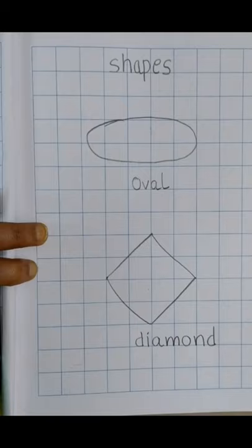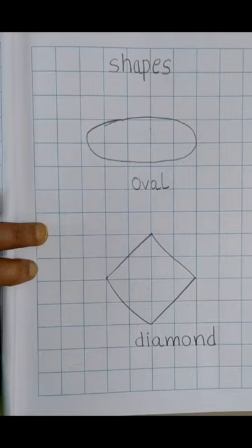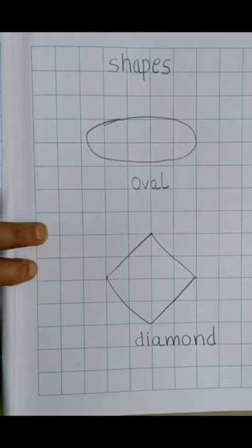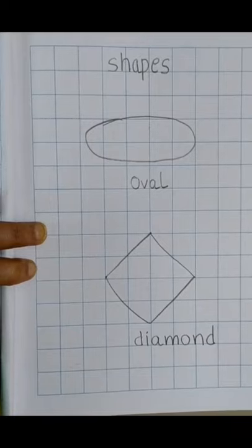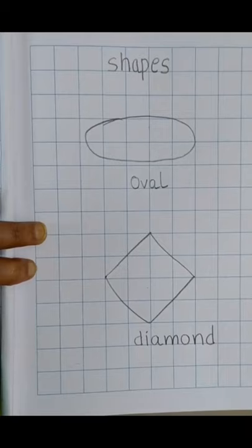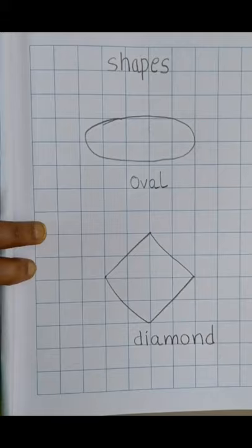And we know the different objects with these shapes. Like an egg, like a watermelon, they are all oval in shape. And diamond like the kite. Yes, it is diamond in shape.